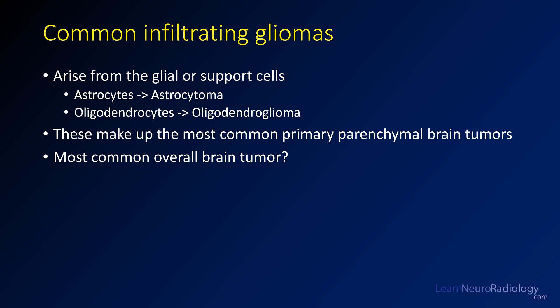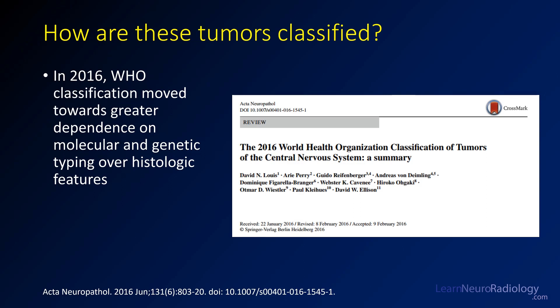What is the most common overall brain tumor? That's going to be meningioma — slightly more common than the intraparenchymal tumors, but those are extra-axial tumors. These tumors are classified in a way that has changed since 2016, when the WHO published a paper emphasizing molecular subtype and genetic typing more so than just histologic morphology.